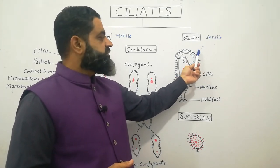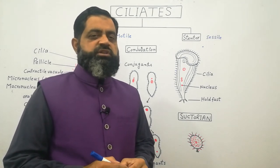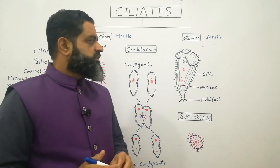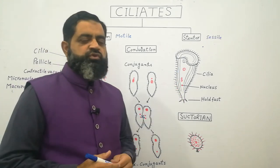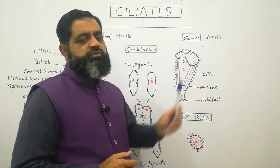The food particle is attracted and then engulfed by the stentor in the form of a food vacuole with the help of phagocytosis. The food vacuole digests the food with the help of enzymes and the undigested food is thrown out of the body.